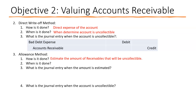The allowance method involves estimating uncollectible accounts receivable. The percentage of receivables method looks at the aging and applies percentages based on history and customer credit risk. Other estimation methods can be used as long as you're consistent period to period. The adjustment is made at the end of the accounting period or at year end when financial statements are produced.